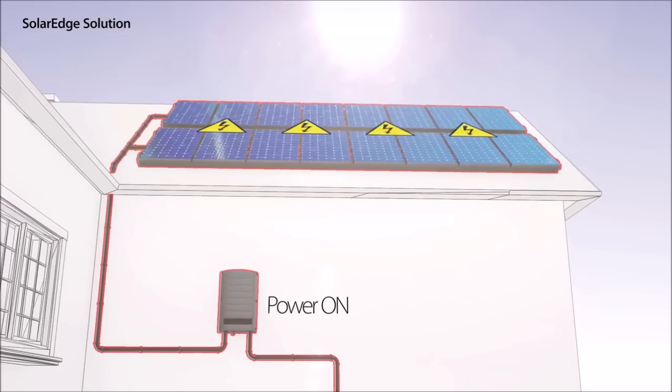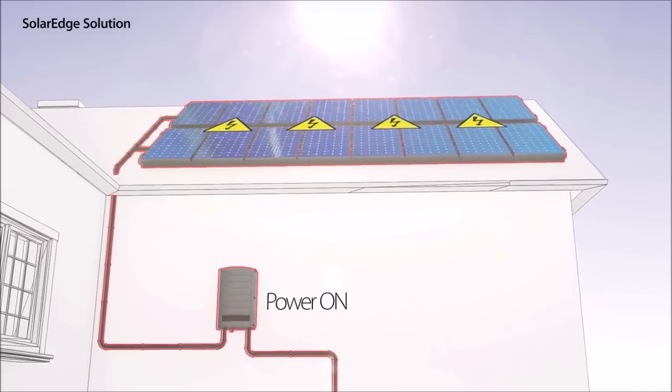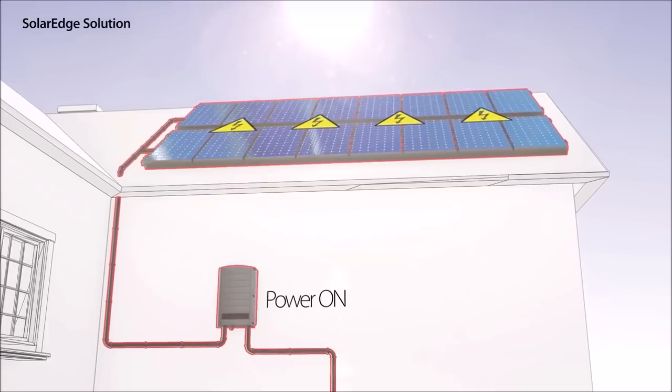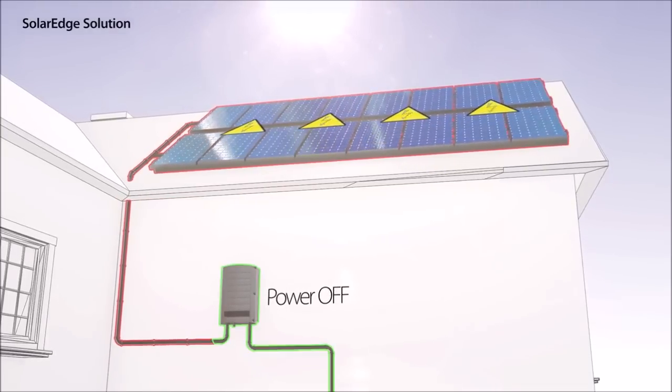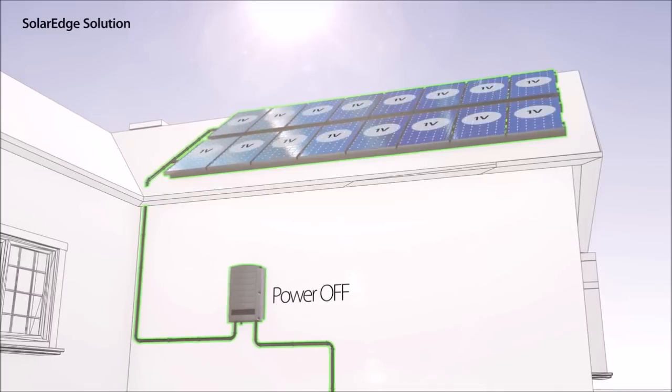In addition, we have incorporated panel-level safety mechanisms to protect installers, electricians, and firefighters. With the SolarEdge solution, whenever AC power is off, the string's DC high voltage is automatically reduced to a safe voltage.